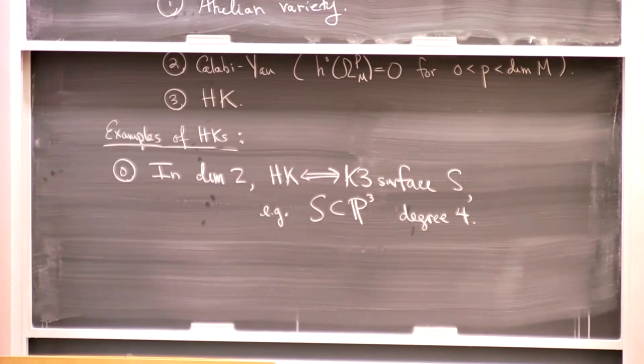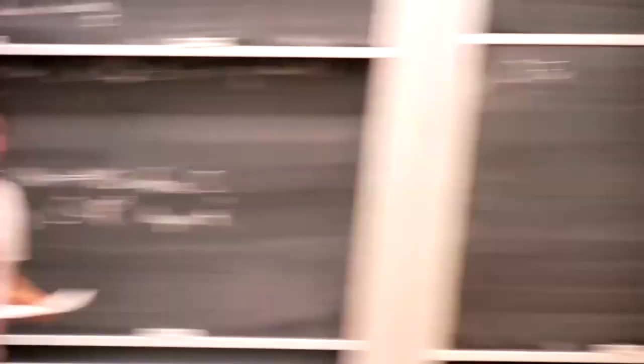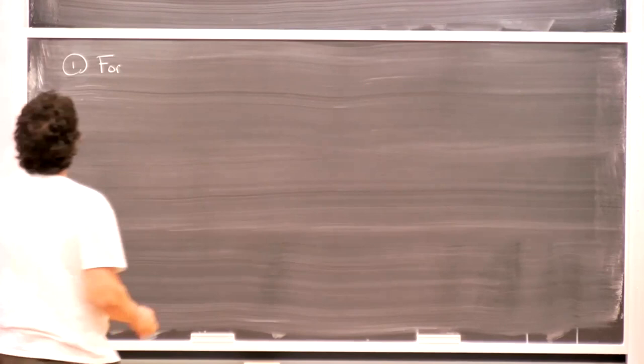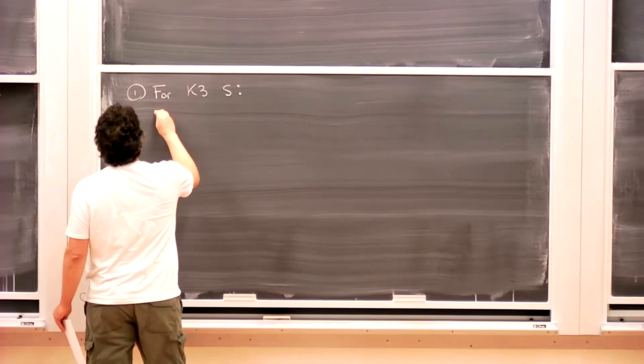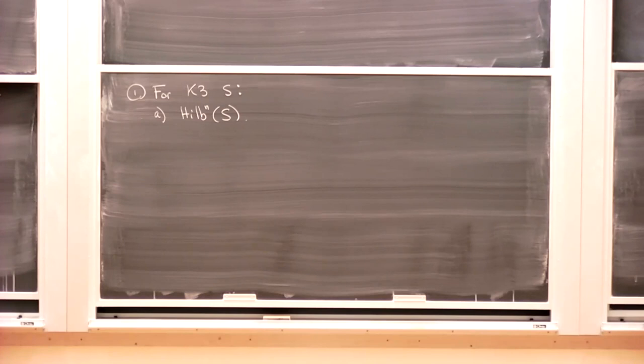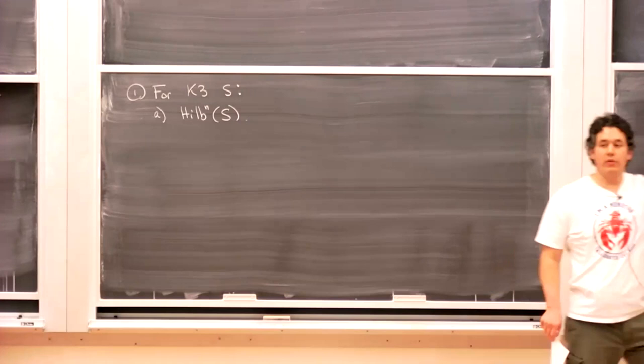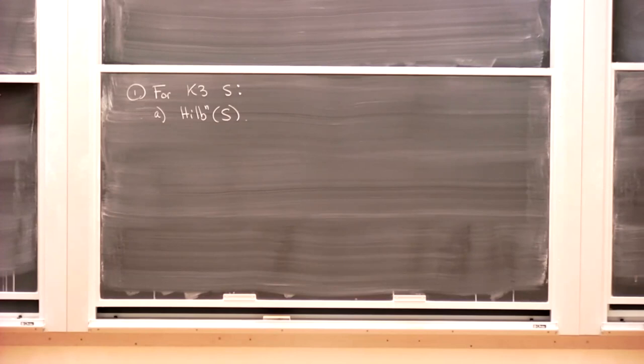The first real example: given a K3 surface S, you can take the Hilbert scheme of n points on S. That turns out to be a hyperkähler variety — you can descend the two-form from the product of copies of S down to the Hilbert scheme. This gives examples in every even dimension.